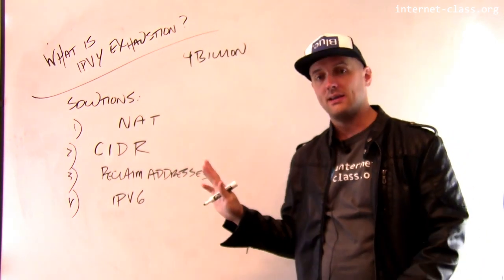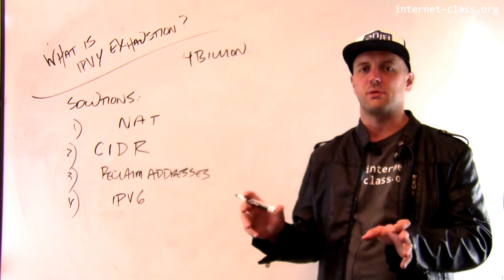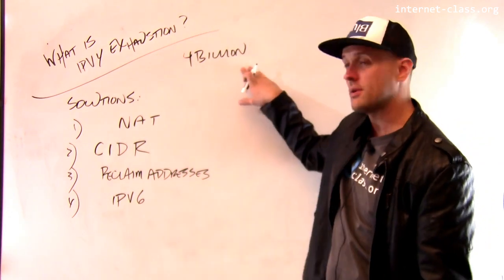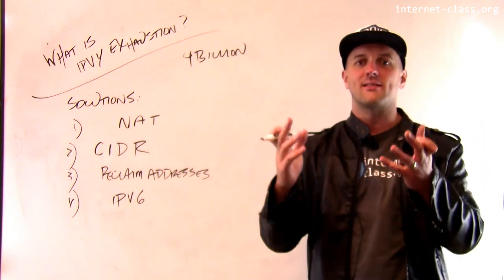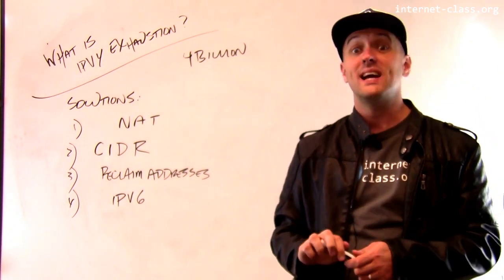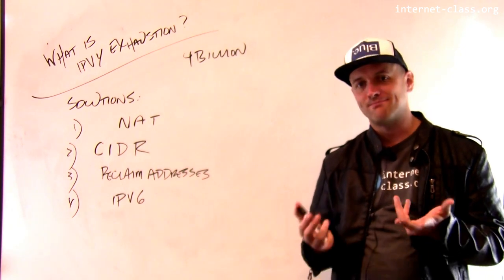And in reality, there's fewer than that because some of them are special and have special purposes. But whatever, so about 4 billion IP addresses. You might think, hey, that's a lot. And I'm sure that the architects of the early internet thought, this is great, this is a lot of addresses. We'll never run out of them. Well, we ran out.